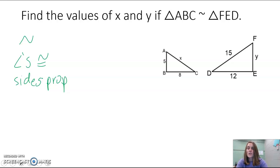X and Y are both two measures of sides. So we're going to focus on that, that the sides are proportional. So if we look at each of the corresponding sides of triangle ABC and compare them to the corresponding sides of triangle FED, then they should be proportional.